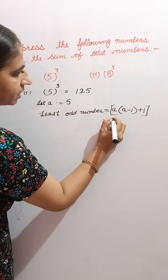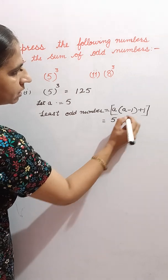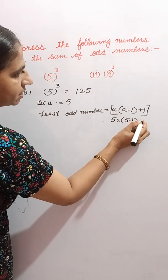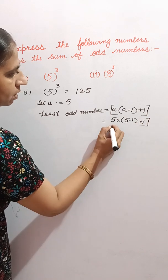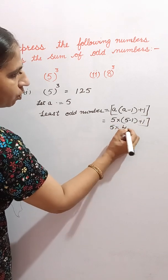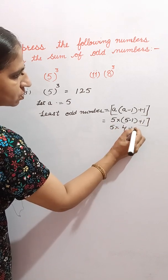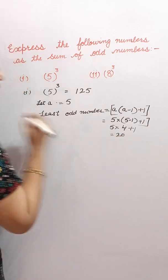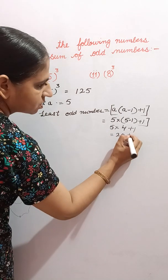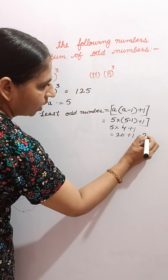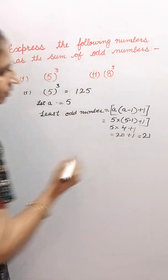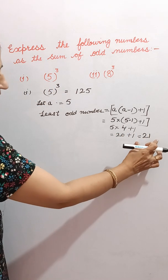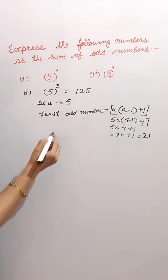A is 5, so this is 5 minus 1 plus 1: 5 multiplied by 4 plus 1, which is equal to 20 plus 1. That is equal to 21. So the least odd number from where we have to start is 21.